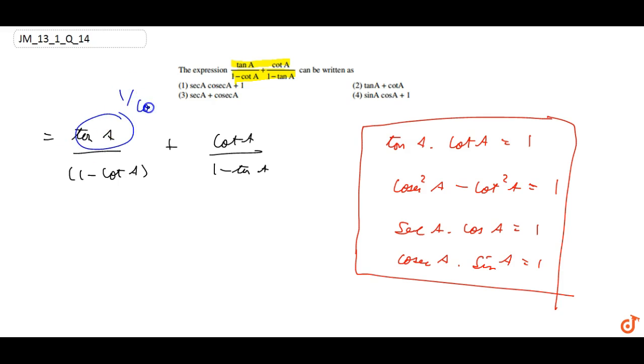We can write tan A as 1 by cot A. So we get 1 by cot A upon 1 minus cot A plus 1 by cot A upon 1 minus cot A.